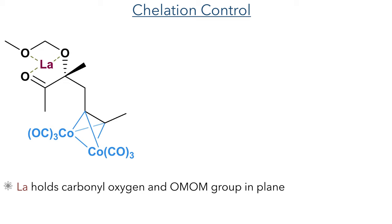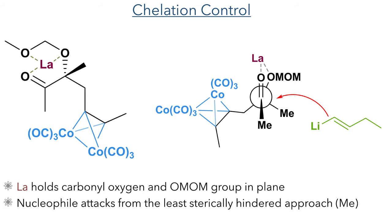We can see this by looking at the conformational analysis of the reacting species. The lanthanum provides chelation control by coordinating to the carbonyl oxygen and the oxygen of the MOM group, which holds these groups in the same plane. In this conformation, the cobalt-protected alkyne blocks one face of the molecule and forces the nucleophile to approach from the least sterically hindered side, thus controlling the stereoselectivity of the reaction.